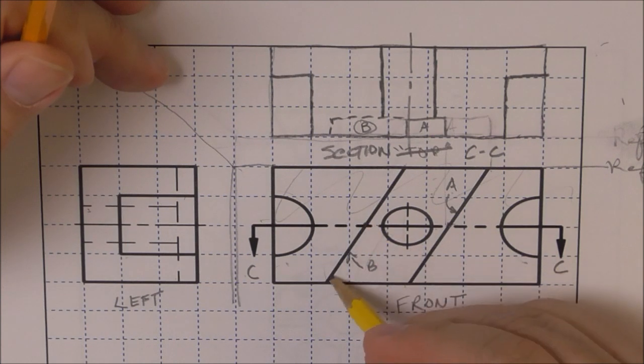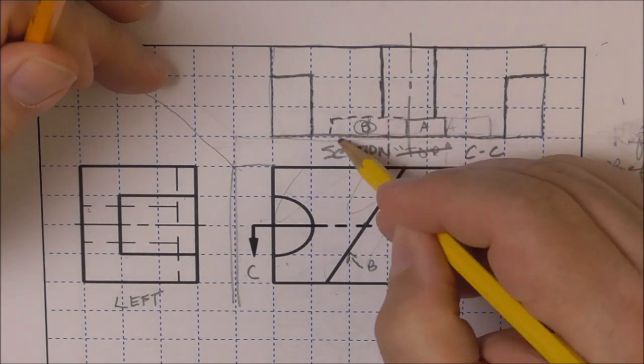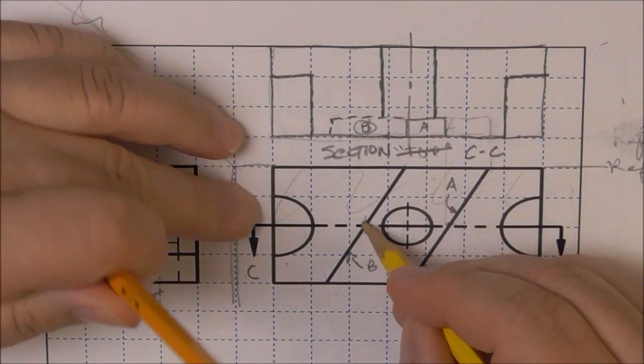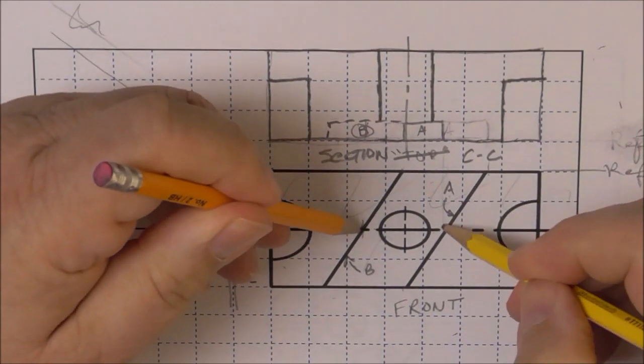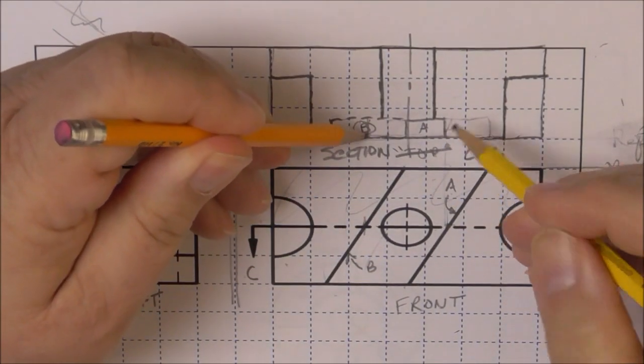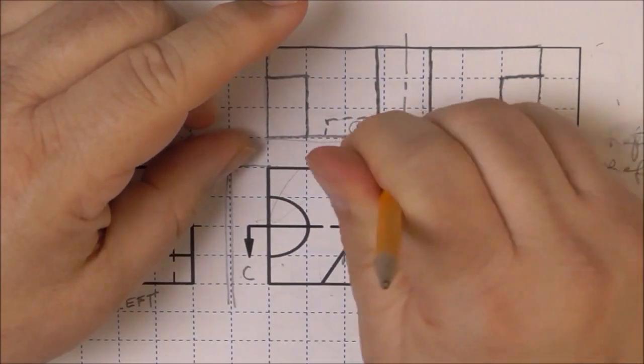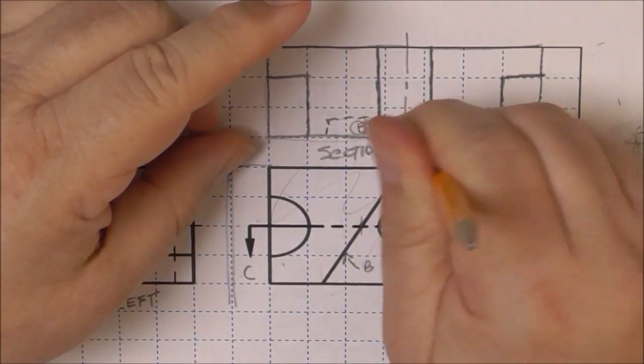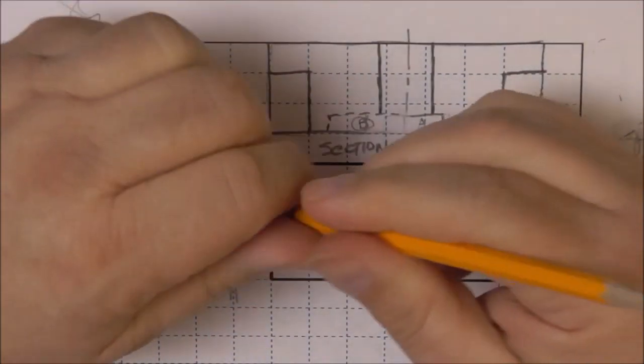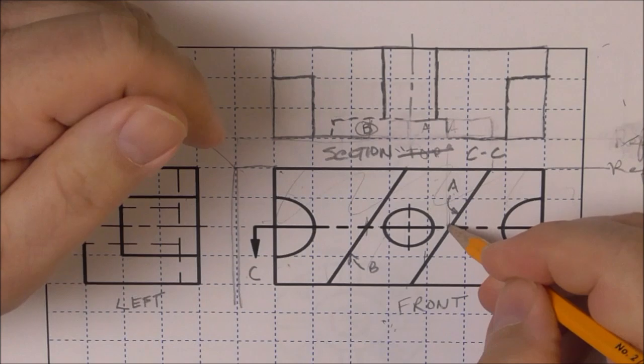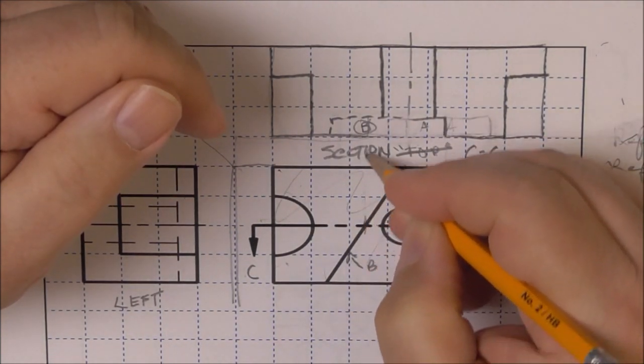B is only seen from here to here now as a hidden line, right here from here to here. The slot if you will is changed. It's now open.